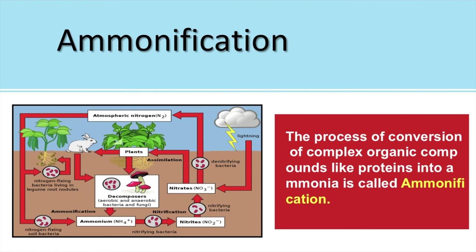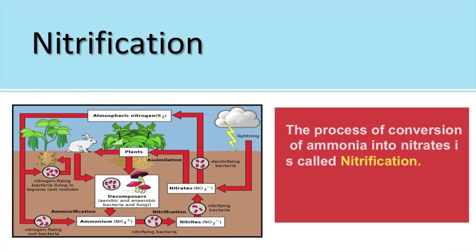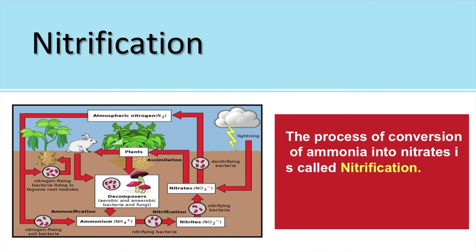The next step is nitrification. Nitrification is the process of conversion of ammonia — produced during ammonification — back into nitrate. Some of the ammonium compounds are taken up by plants, and the rest are converted into nitrates by nitrifying bacteria. So nitrifying bacteria carry out the process of nitrification, which is the conversion of ammonia into nitrate.